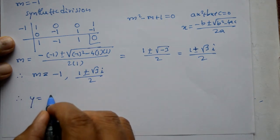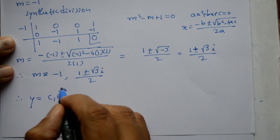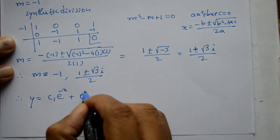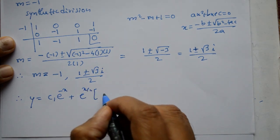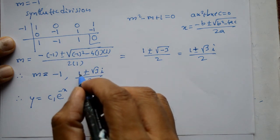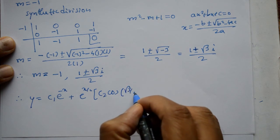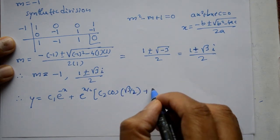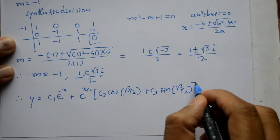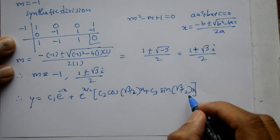y is equal to c₁e^(-x) plus alpha kya hai? 1 by 2 hai. e^(x/2) into c₂ cos beta. E beta kya hai? Beta kya hai? C₂ cos of root 3 by 2 plus c₃ sin of root 3 by 2. Is tera into x either x hai hai? Ok. This is required a general solution.